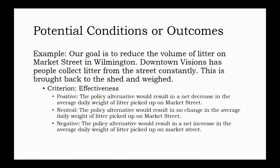Consider this example. Imagine we've identified a policy goal of reducing the amount of litter on Market Street in downtown Wilmington. Downtown Visions is a company that, among other things, picks up litter off the street and sidewalk constantly. Their workers bring what they collect to their central shed and weigh it. If my criterion is effectiveness — the measure of whether the policy has the impact or does the thing that we want — here we want to develop policies that result in less littering, thus less litter for Downtown Visions to pick up. In this case, I'm looking for policies that have the impact of reducing the daily recorded weight of litter collected. I'm going to define positive, neutral, and negative potential outcomes ahead of time. To say a policy is positive in terms of effectiveness, it would have to result in a net decrease in the average daily recorded weight of litter picked up on Market Street. To say it is neutral, it would have to result in no change in the average daily recorded weight. And to say it is negative, the policy alternative would have to result in a net increase in the average daily recorded weight of litter picked up.